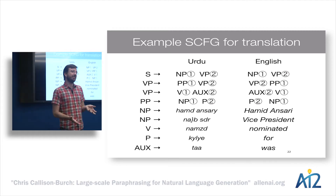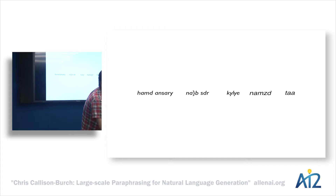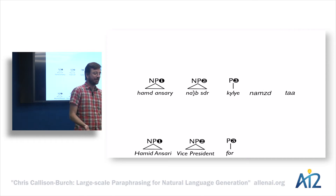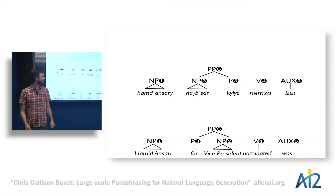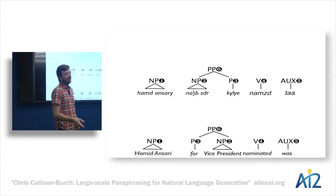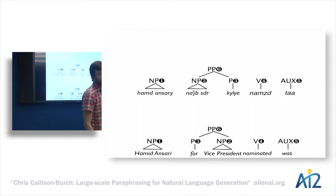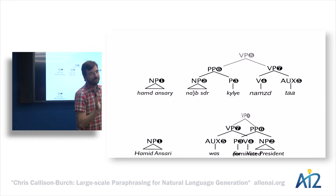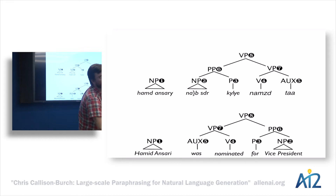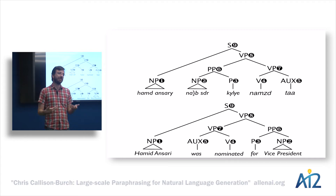When we represent translation this way, the process of translation is actually one of parsing. We have an input Urdu sentence, analyze all the terminal symbols, and if we stopped there we'd have the English output in Urdu order — 'Hamad Ansari vice president for nominated was.' But as we apply higher-level reordering rules, we get the postposition becoming a preposition, the main verb and auxiliary verb inverting, and then the higher subject-verb-object order in English coming from the subject-object-verb order in Urdu. When we reach the S symbol spanning the entire sentence, that's our goal state.